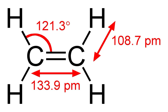Ethylene is produced from essentially all parts of higher plants, including leaves, stems, roots, flowers, fruits, tubers, and seeds. Ethylene production is regulated by a variety of developmental and environmental factors. During the life of the plant, ethylene production is induced during certain stages of growth such as germination, ripening of fruits, abscission of leaves, and senescence of flowers.